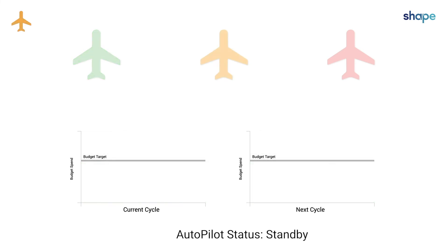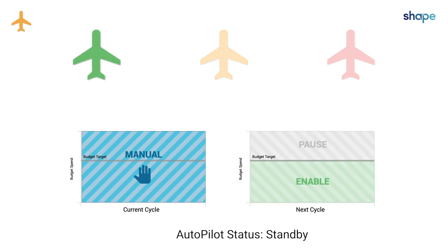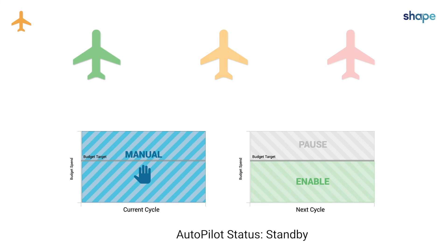The Standby status prevents Autopilot from changing campaign status for the remainder of the current cycle. When the next cycle begins, Autopilot regains permissions to change campaign status. This gives you full manual control of the campaign for the remainder of the current cycle and returns automated control when the next cycle begins.